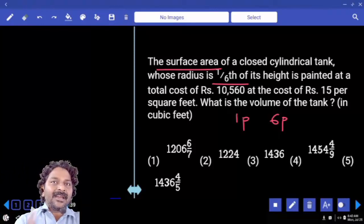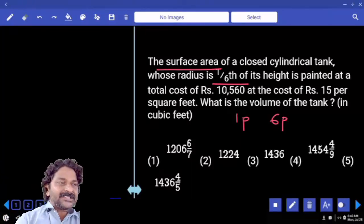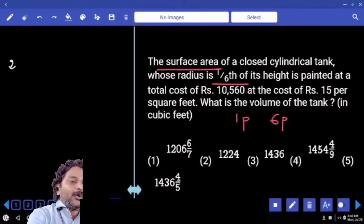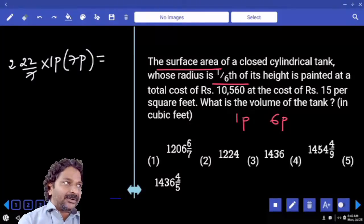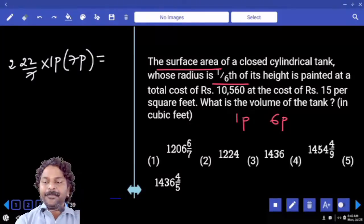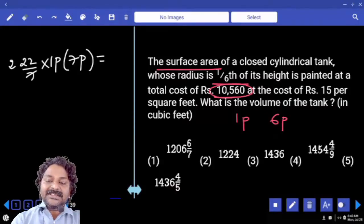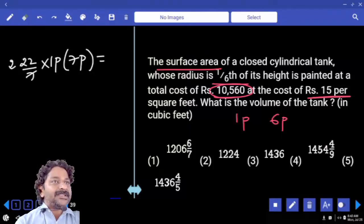Is it total surface area or curved surface area? Total surface area of the cylinder 2πr into r plus h which is seven parts only, and this is the total surface area. Cost wise it is given as 10,560 at the rate of 15 rupees per square feet.